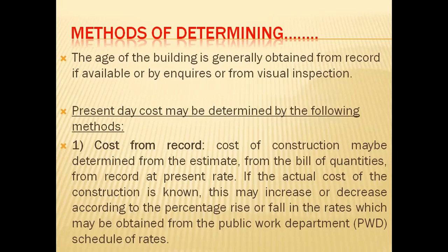The first method is cost from the record. If we have built a building, we will have all the bills. We will multiply those materials at today's rate, so we will know how much the cost of the building is coming. For the current rates, we will go to the PWD department, the Public Works Department, and take all the cost from there. This method is applicable when we have the material data given.